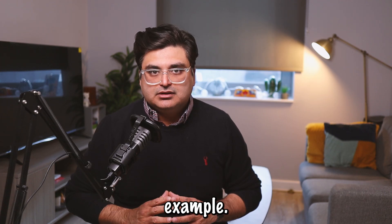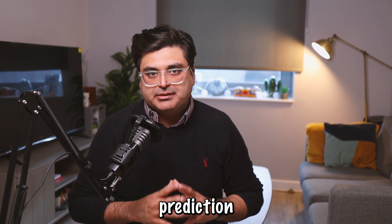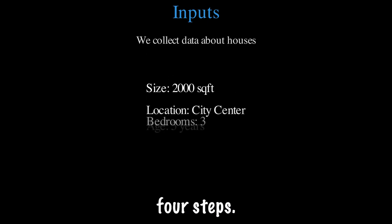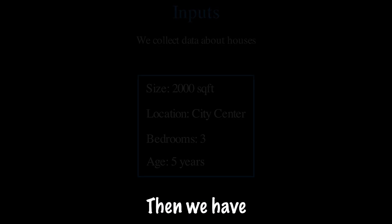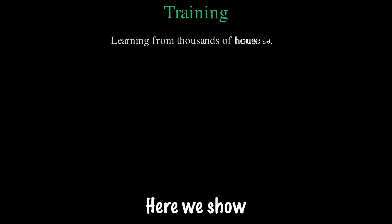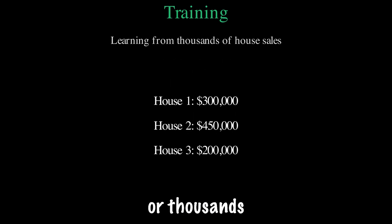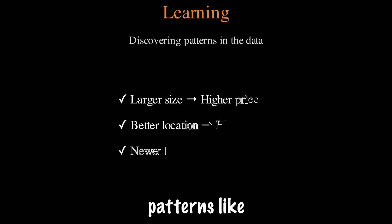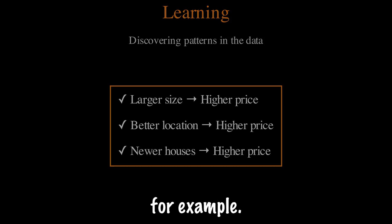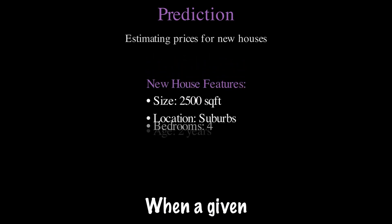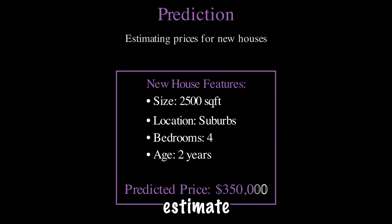Let's take a practical example — building a housing price prediction model. We can divide it into four steps. First, input: we collect data about houses such as size, location, number of bedrooms, and age. Second, training: we show the algorithm hundreds or thousands of houses with known sale prices. Third, learning: the algorithm discovers patterns, like larger houses in good locations tend to cost more. Fourth, prediction: given a new house, the model can estimate its price.